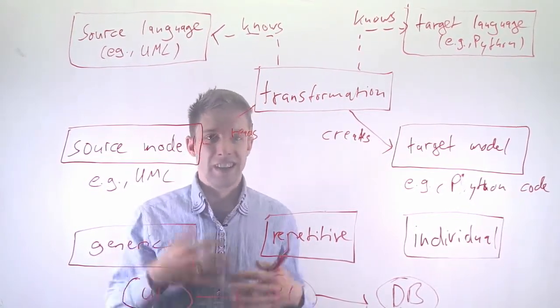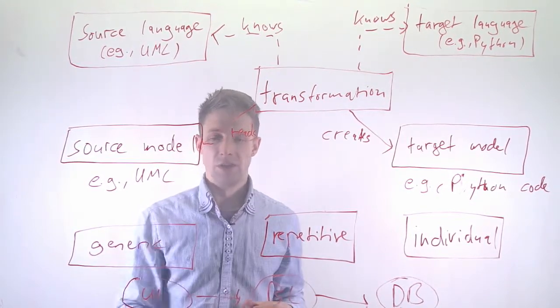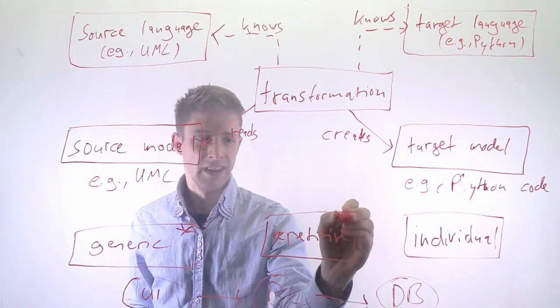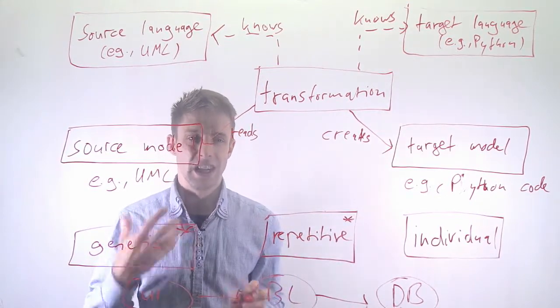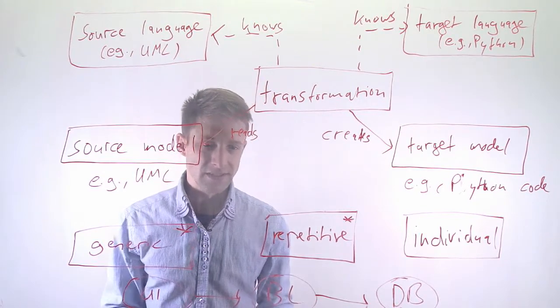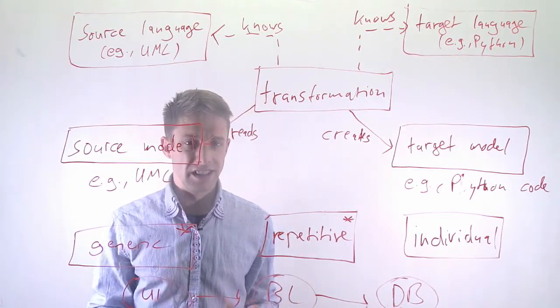But the idea is that a lot of these two boxes here, a lot of that you could generate if you had a model that would make this much, much simpler. So that's roughly the idea here.